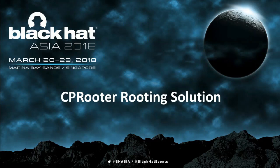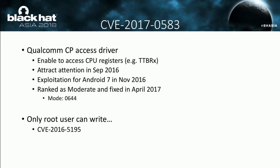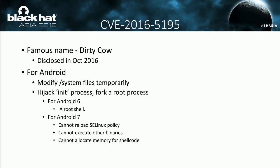Now let me detail another rooting solution: CPU Router. CPU Router is based on CVE-2017-0518, a vulnerability that affects large numbers of Qualcomm-based Android devices, fixed in April last year. The CPU access driver enables an attacker to access CPU registers like TTBRX. It first attracted my attention in September 2016, and the exploitation for Android 7 was finished in November. Since only the root user has write ability, the exploitation requires another vulnerability. That famous vulnerability is Dirty COW, disclosed in October 2016, with many proof-of-concept implementations on GitHub. In summary for Android it can be used to modify files in the system partition, temporarily hijack an init process, and fork a root process.